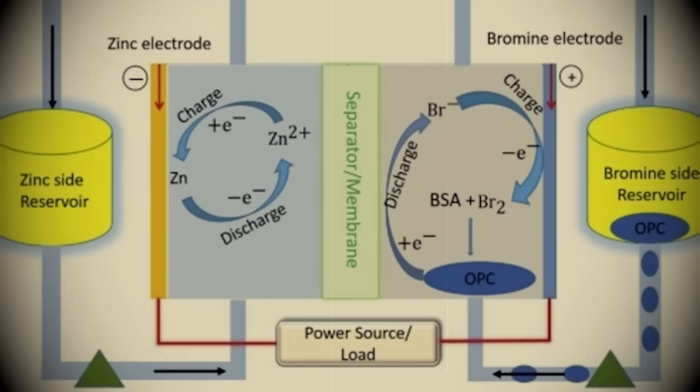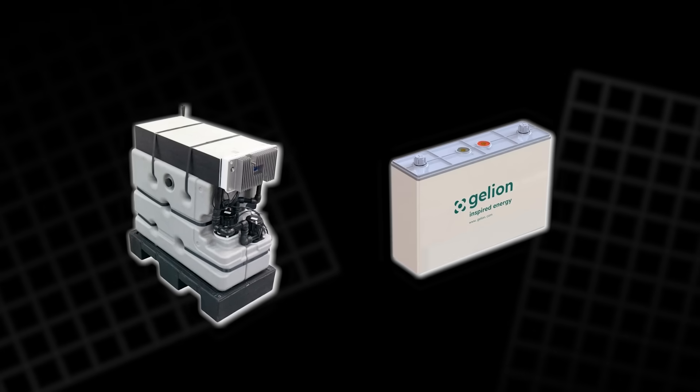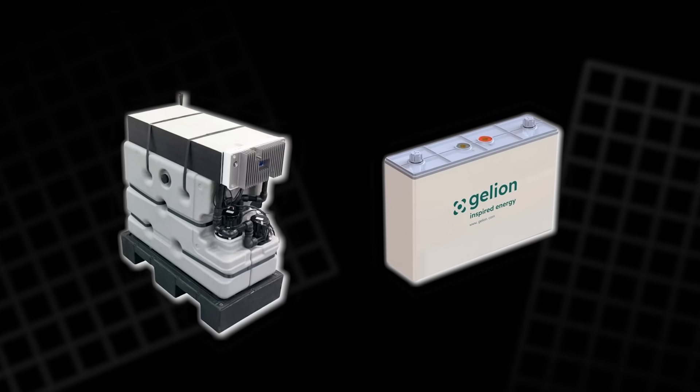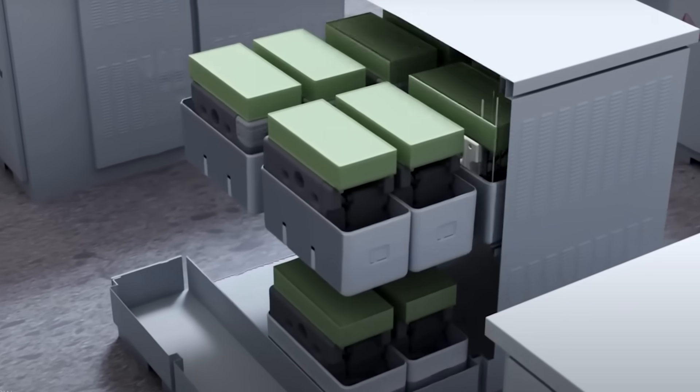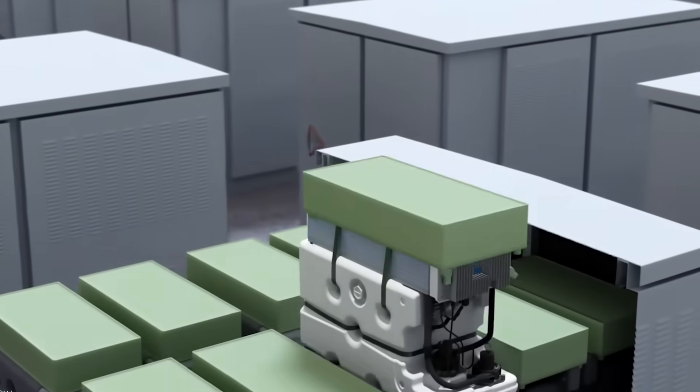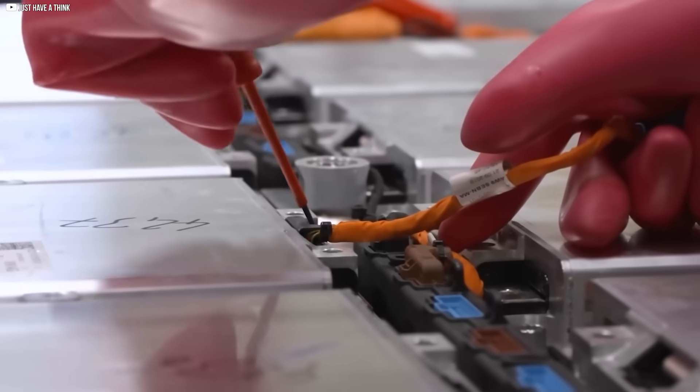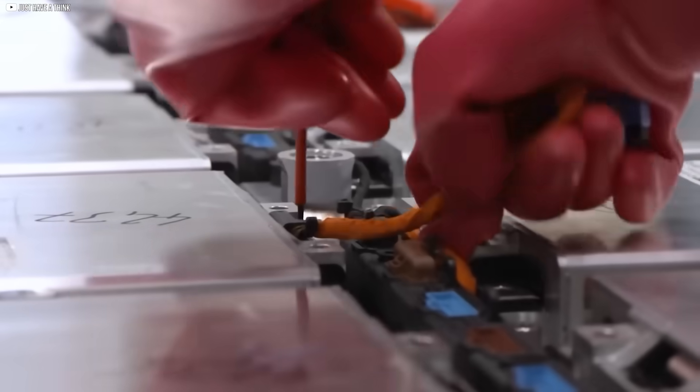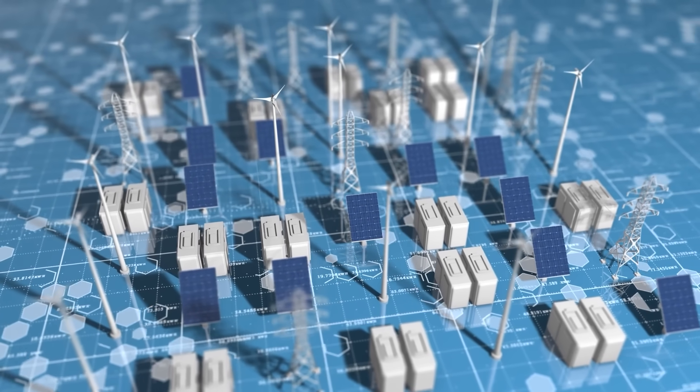Zinc bromine systems also skip the cooling bills. Both Redflow and Gelion claim their units operate without air conditioning, even in extreme climates. And when it's time to install, shipping and integration are simpler too. Less bulk. Fewer safety concerns. Lower engineering requirements. For long-duration grid storage, that kind of efficiency adds up fast.